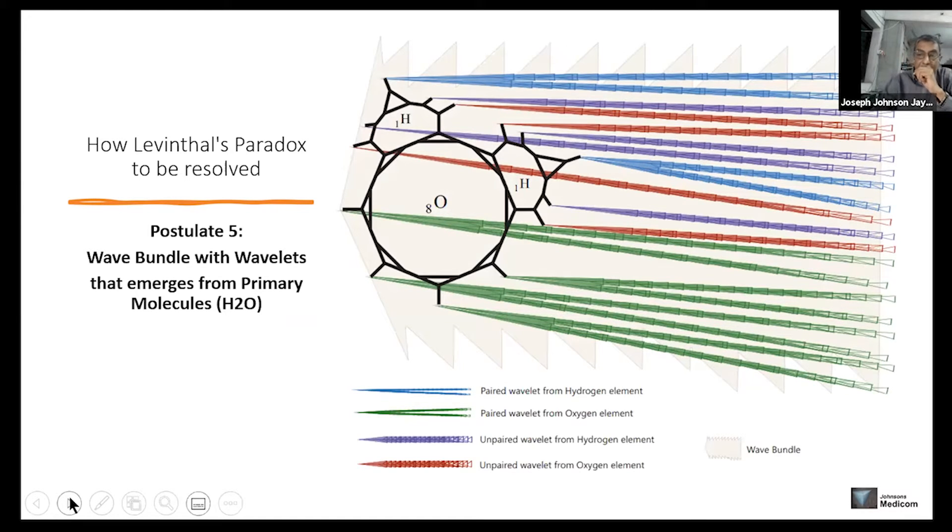As a result of this molecular model, we can expect there is a wave bundle that is unique for each molecule. Each molecule will have a unique wave bundle that has wavelets. The wavelets start from, there are two types of wavelets, the strings that propagate the wavelets. One is the paired and another is unpaired. If you take from the hydrogen element, it's paired.